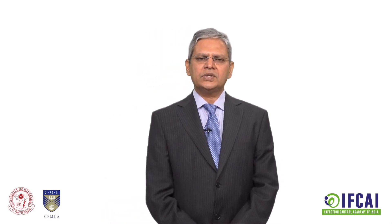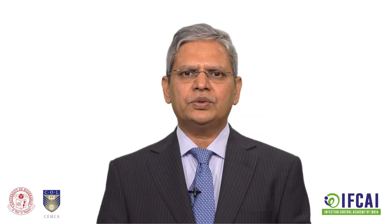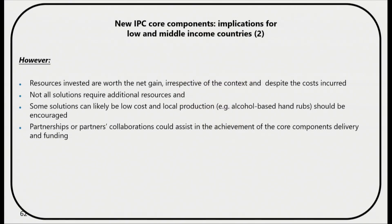Going further on some of those issues, if we are going to talk about some of the solutions — for example, alcohol-based hand rubs, if they can be encouraged to be produced locally instead of importing or making it very complicated and expensive, that could actually have a very positive impact. Partnerships and collaborations, for example organizations like Infection Control Academy, are collaborating with several governmental and non-governmental organizations and also publish newsletters and journals in order to create awareness.